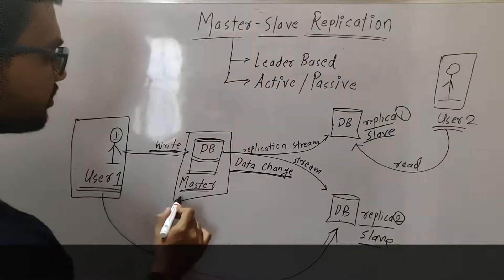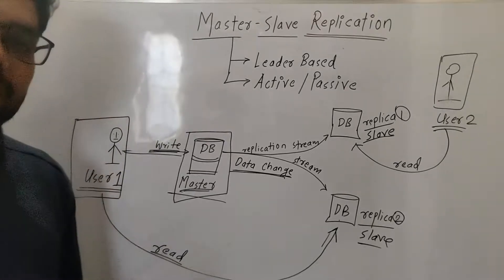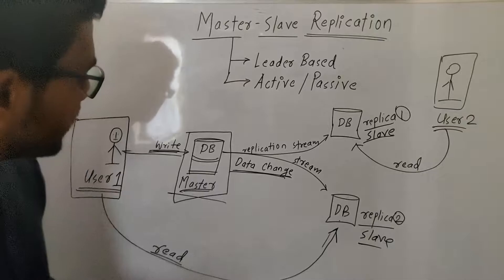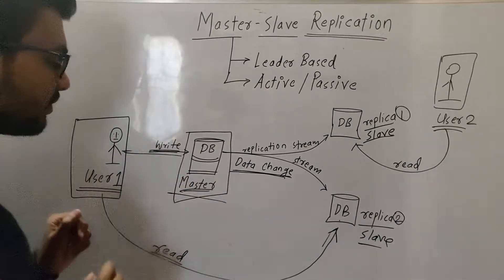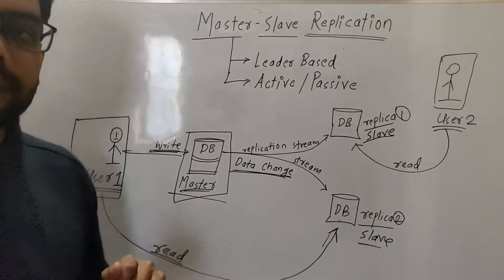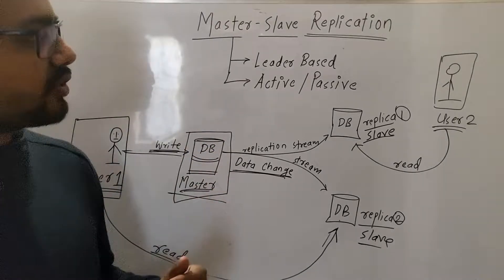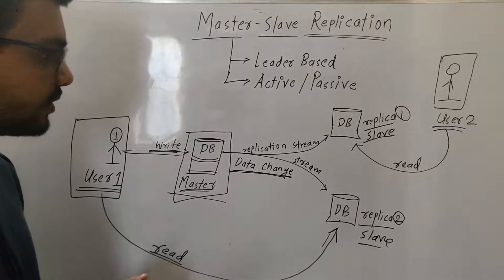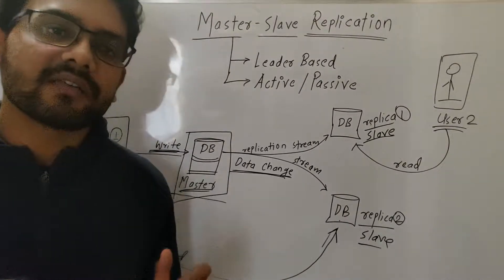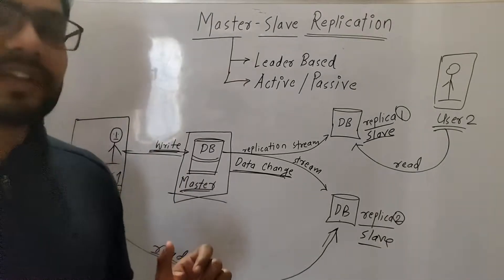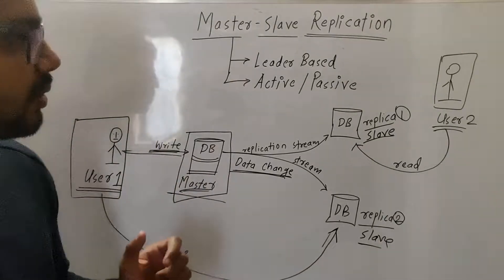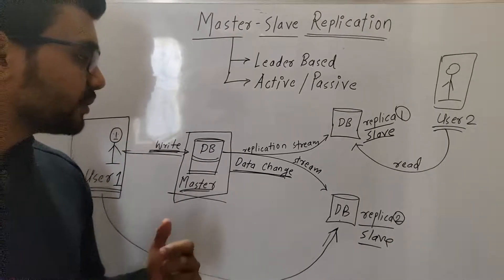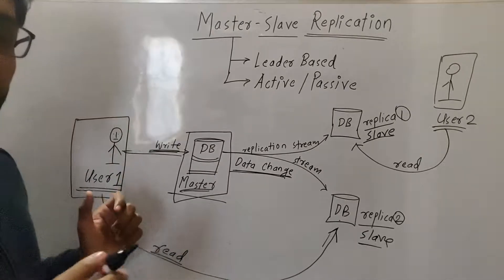Now let's say this master database server goes down for some reason — maybe the machine got shut down or got corrupted. Then only our write requests will be affected in our application, but users requesting read data are still being served. So only some part of our application will get affected. This will not be a single point of failure, and the whole application will not go down — only users who want to write to the database are affected.